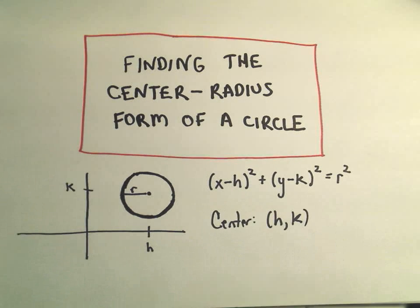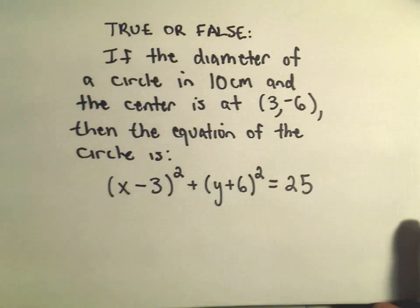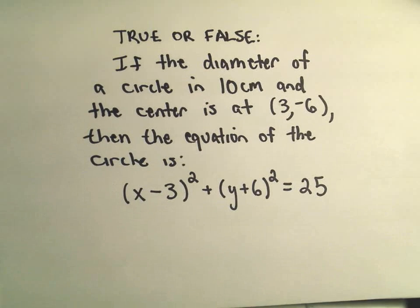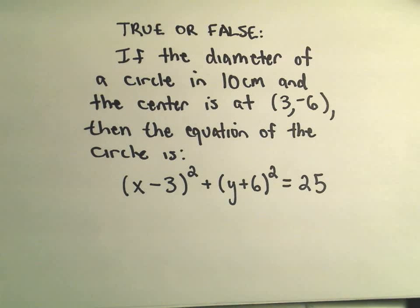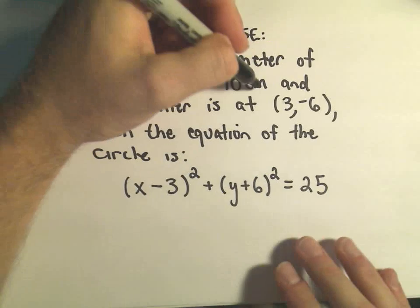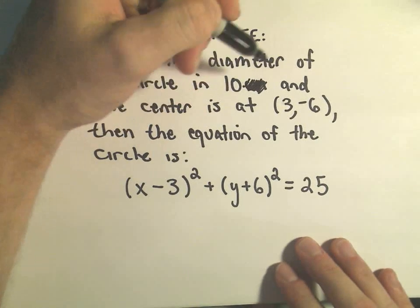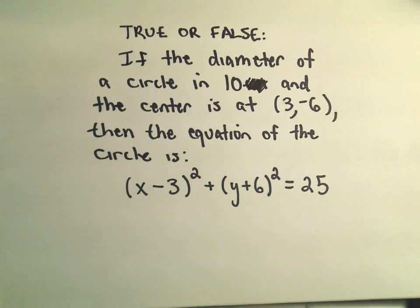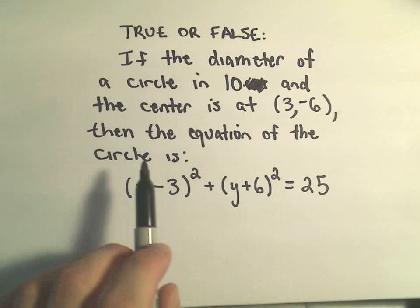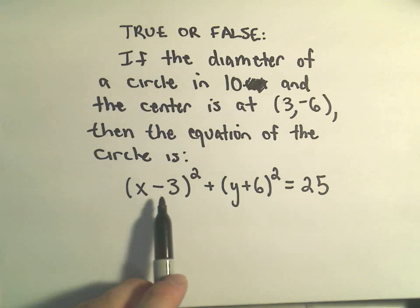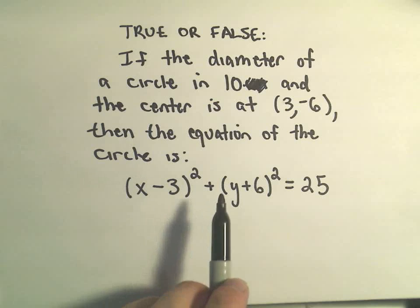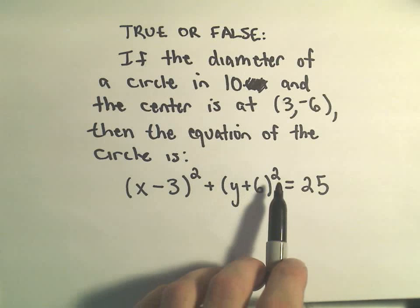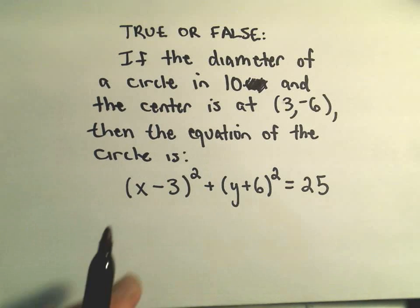So maybe a true-false question here real quick. Suppose we know the diameter of a circle is 10 centimeters and the center is at... If the center is at the point (3,-6), then the equation of the circle would be (x-3)² + (y+6)² = 25. Is that true or false?